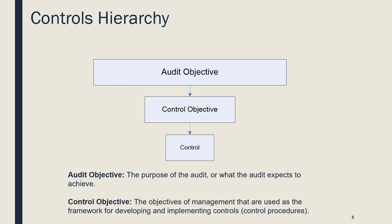A control objective is in place to meet an audit objective. An example of an audit objective is: there is reasonable assurance that the financial statements can be relied upon and are free of material misstatements. Or for PCI-related audits, an audit objective could be: there is reasonable assurance that systems processing payments are adequately secure to protect customer information. These audit objectives are at the top level of what needs to be achieved. To achieve the audit objective, you come down to the control objective that breaks it down further, and then to achieve a control objective, you need the actual controls to help meet that objective. The audit objective is usually the purpose of the audit, and the control objective represents management's objectives used as a framework for developing and implementing controls.